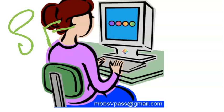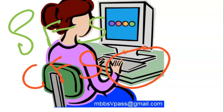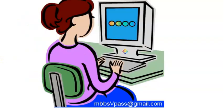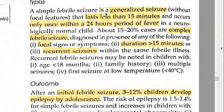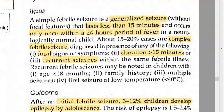You have simple febrile seizures and complex febrile seizures. Simple is a generalized seizure — it is not focal, not one part of the body, but the entire body. It lasts less than 15 minutes, and it occurs only once within a 24-hour period of fever. The condition is that the child should be neurologically normal — before this, the child was fine with no unprovoked seizure and no intracranial infection. So that is simple.